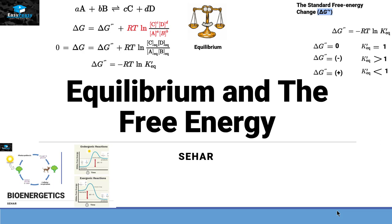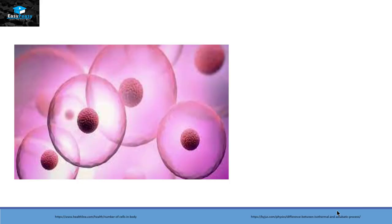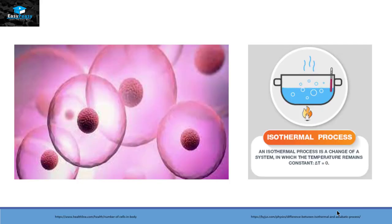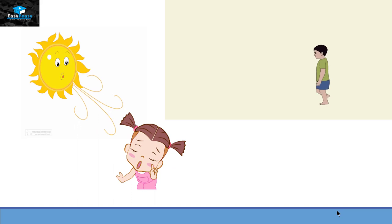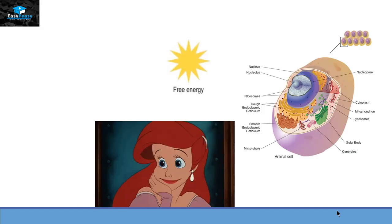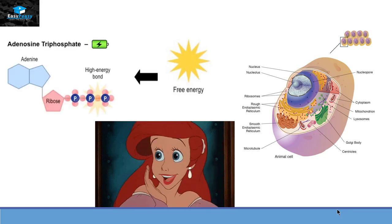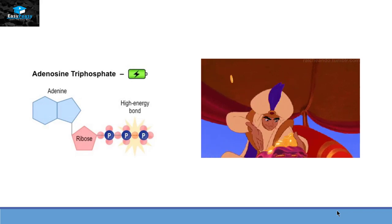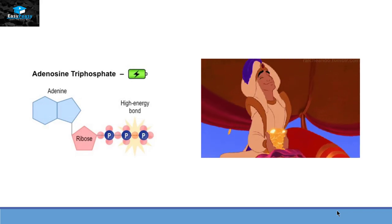As we know, human beings are made up of cells and the cells are isothermal in nature, which means that the change of temperature is nearly absent in living organisms. So the work done in a living system is not dependent on the change of temperature. Rather, living cells are dependent on free energy, and this free energy will be converted into adenosine triphosphate (ATP), which is also called the energy currency of the living organism.